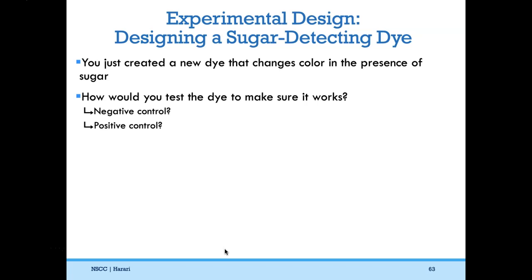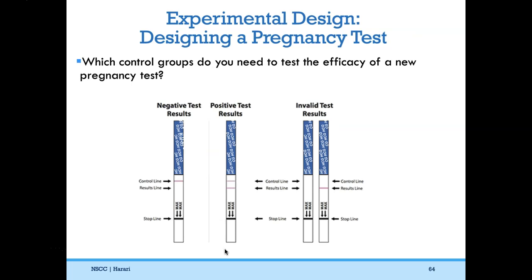One more example: suppose you design a new pregnancy test. What control groups would you want to use? A negative control would be testing on a child or a man — someone definitely not pregnant — to make sure you always get negative test results. A positive control would be testing an eight-month pregnant woman to make sure the test comes out positive.